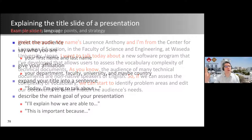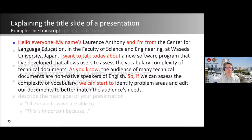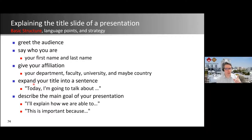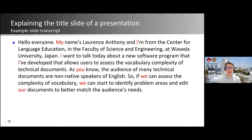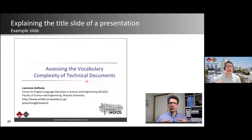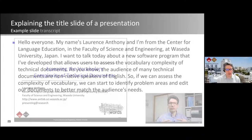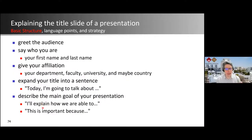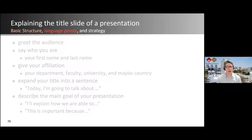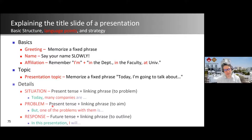Then I summarize these points. The basic structure is: greet the audience, say who you are, give your affiliation, expand your title into a sentence. Don't just say the title — say 'Today I'm going to talk about assessing the vocabulary complexity of technical documents.' Describe the main goal of the presentation and summarize the main points — a lot of people forget this. After you say the title, don't just finish. Go on and summarize the main points, because you've got one minute for this title slide. Language points include: memorize a fixed greeting phrase, say your name slowly, affiliation is 'I'm in the department, in the faculty, at the university.'